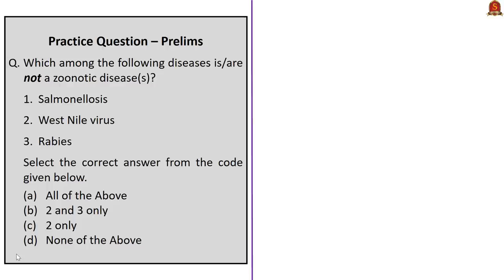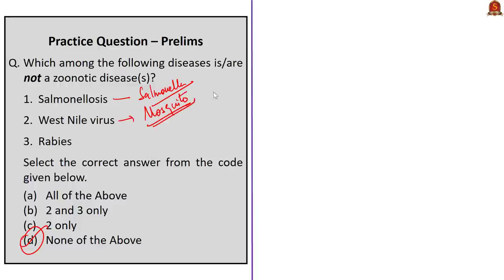Next question: Which among the following diseases is not a zoonotic disease — Salmonellosis, West Nile virus, Rabies? All three are in fact zoonotic diseases, so the answer is option D: none of the above. Salmonellosis is caused by Salmonella bacteria widely distributed in domestic and wild animals. West Nile virus is a mosquito-borne disease maintained in a cycle between birds and mosquitoes. Rabies is a vaccine-preventable zoonotic viral disease that spreads to people via bites or scratches from animals like bats, raccoons, or most commonly domestic dogs.